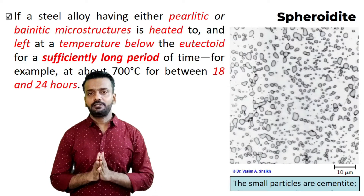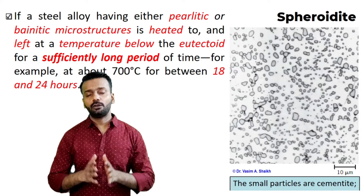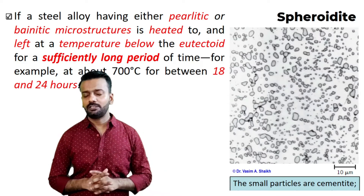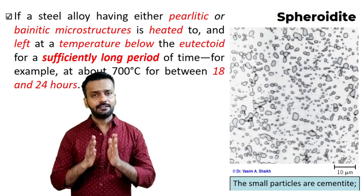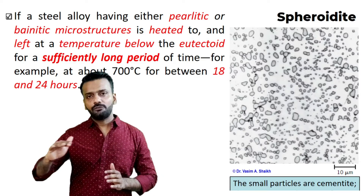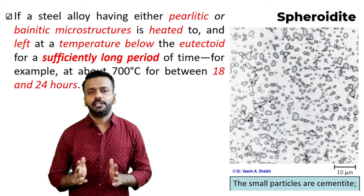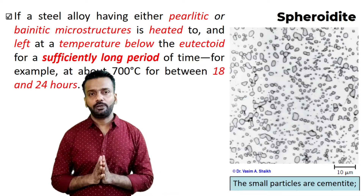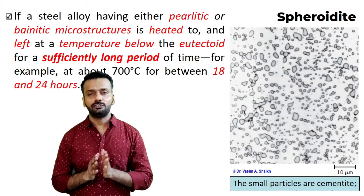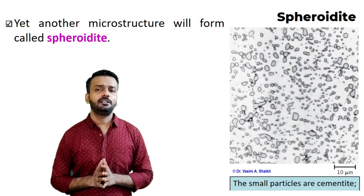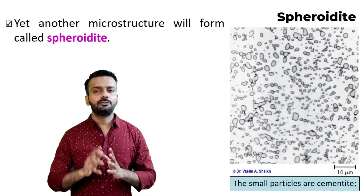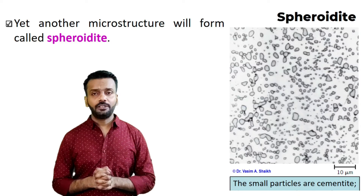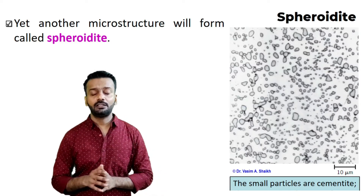Spheroidite. Now let us see what is a spheroidite structure. If a steel either has pearlite or bainite microstructure and it is heated to a certain temperature just below the eutectoid temperature — that is 727°C — and it is held and kept at that temperature for a very long time, around 18 to 24 hours, then the microstructure you will get is spheroidite. A spheroidite structure will resemble like small spheres in a matrix of some other phase. The white phase which you see in this structure is nothing but alpha ferrite phase and the small spheres which you see are nothing but cementite.